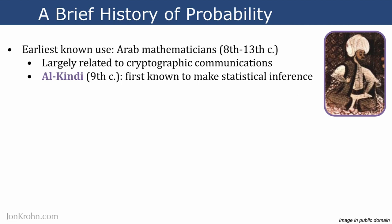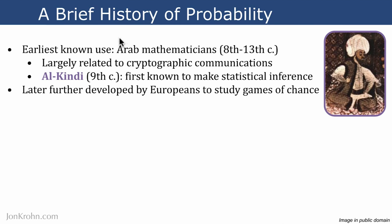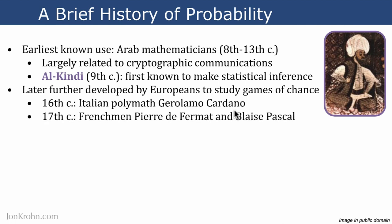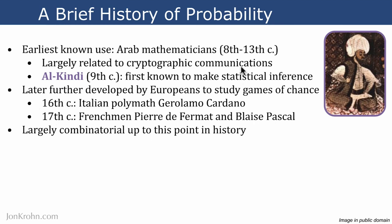Like many mathematical and intellectual developments, Europeans several centuries later built upon the early work of Arab mathematicians, specifically developing probability further to study games of chance. The 16th century Italian polymath Gerolamo Cardano played a big role in this. A century later, these ideas were developed further by the Frenchmen Pierre de Fermat and Blaise Pascal. Up to that point in history, all probability theory was combinatorial — dealing with discrete integer numbers, for example working with integers of count data.